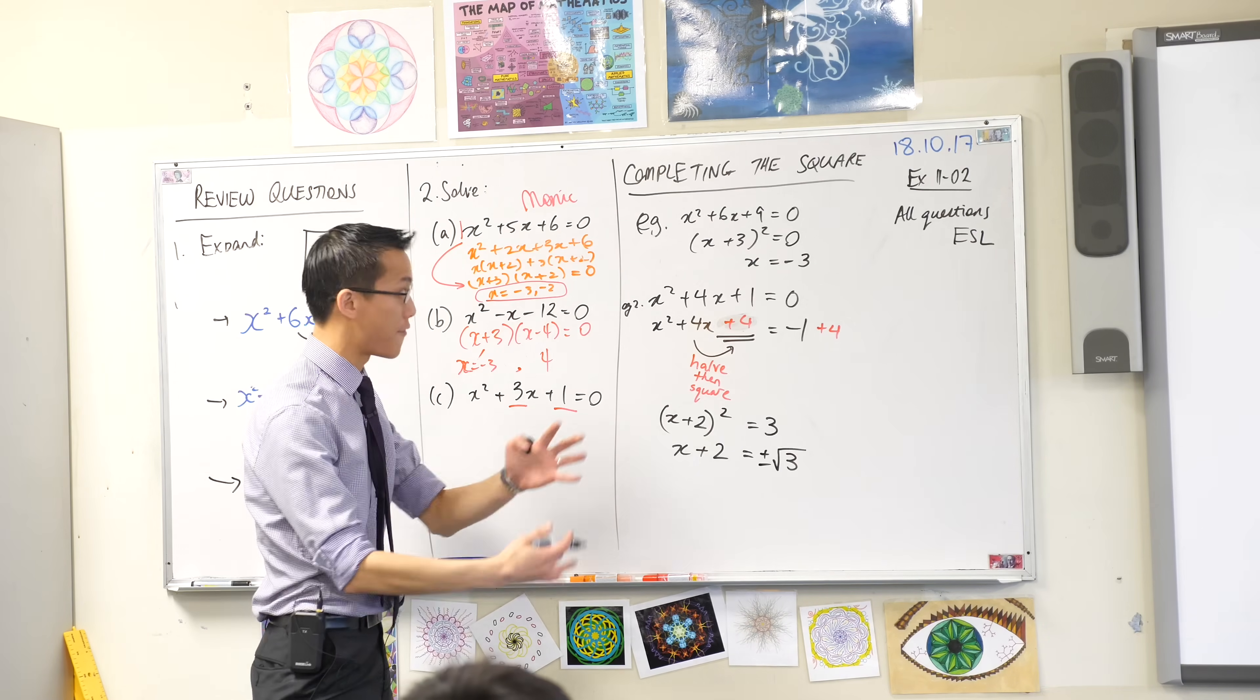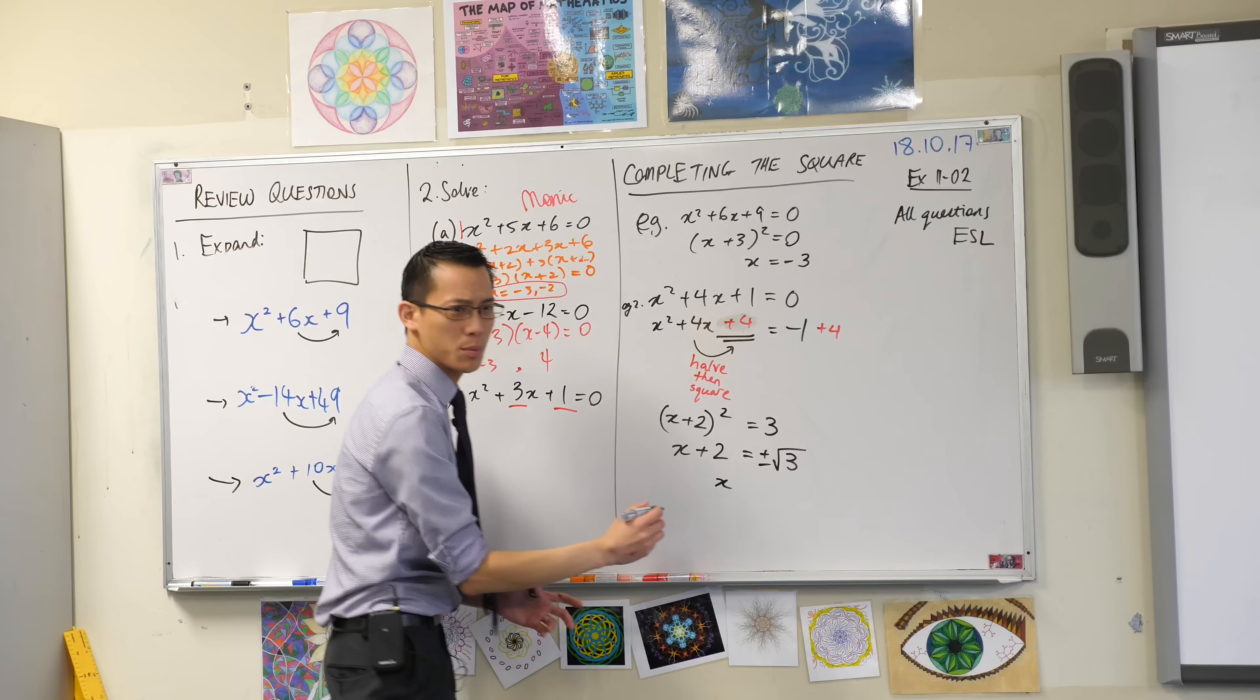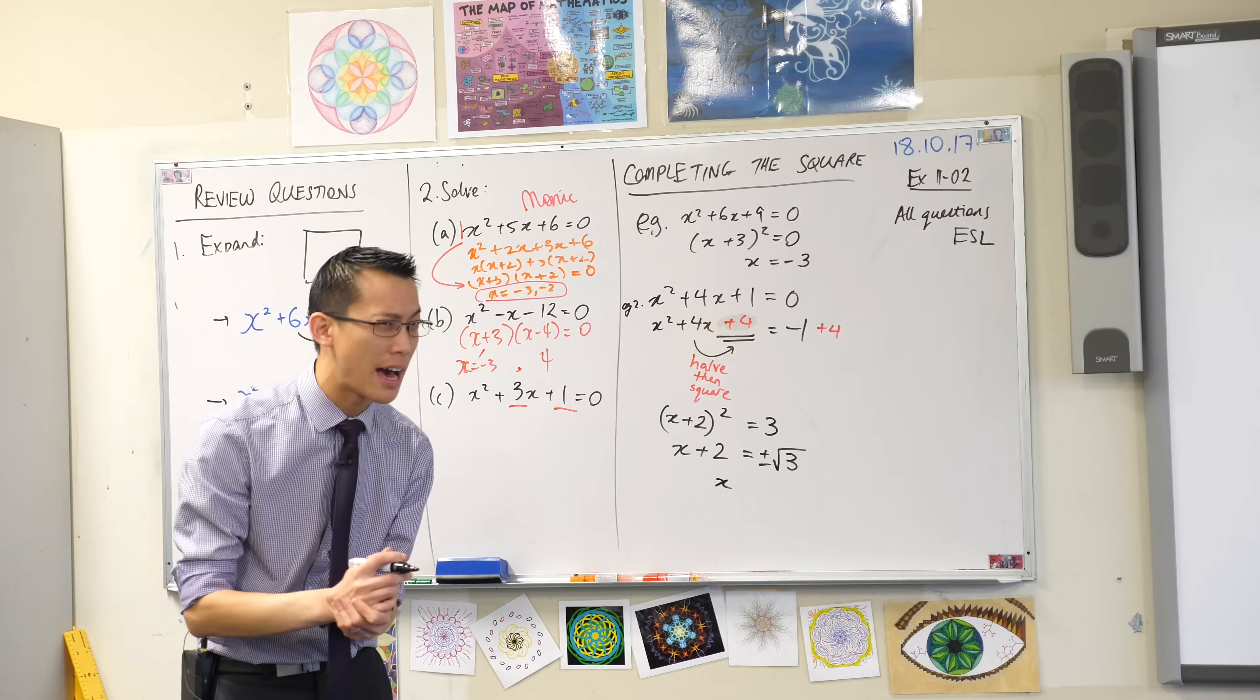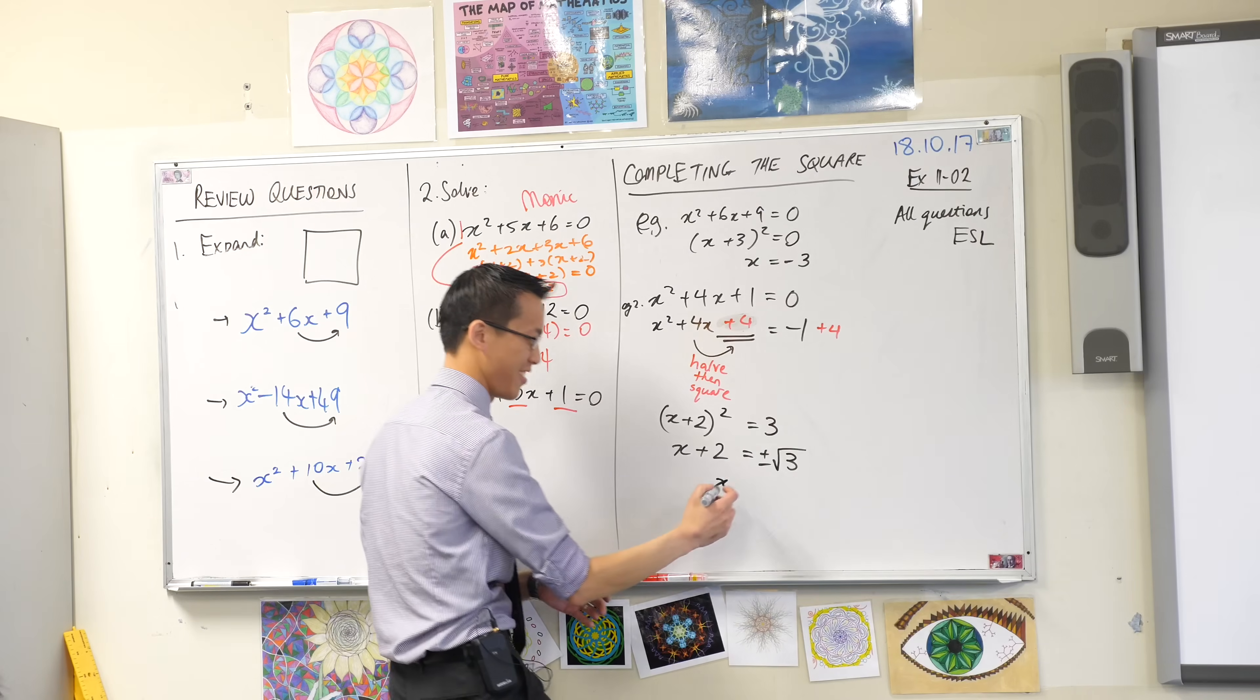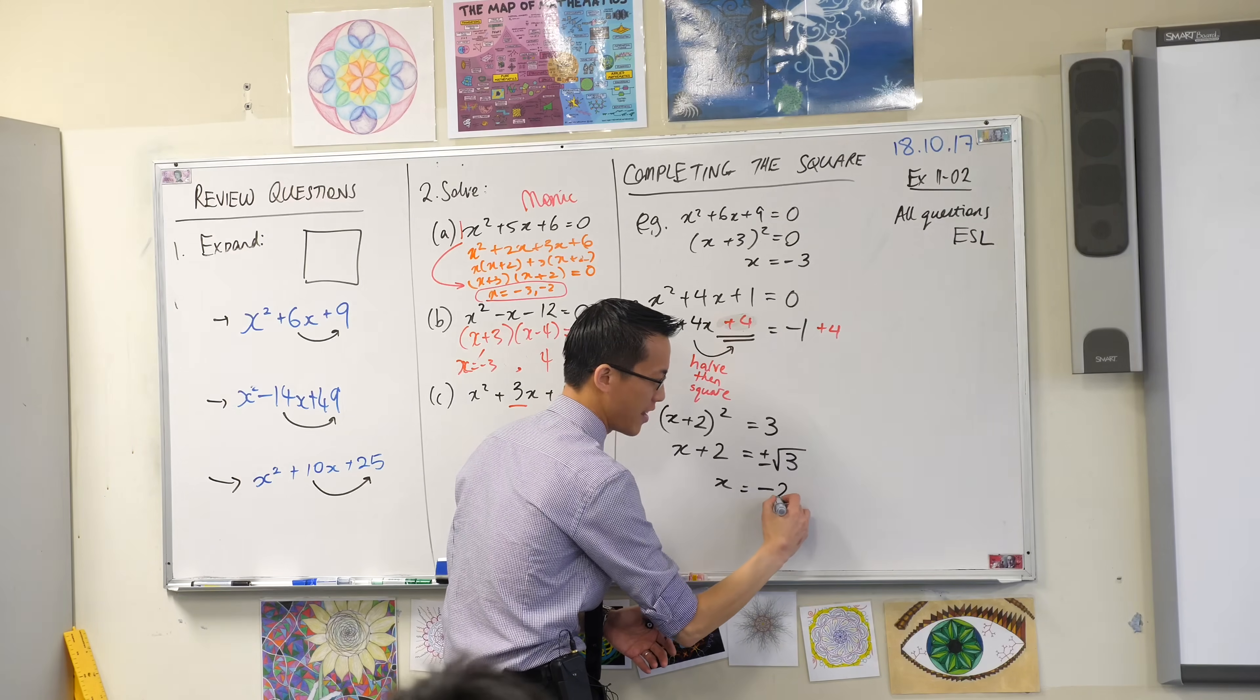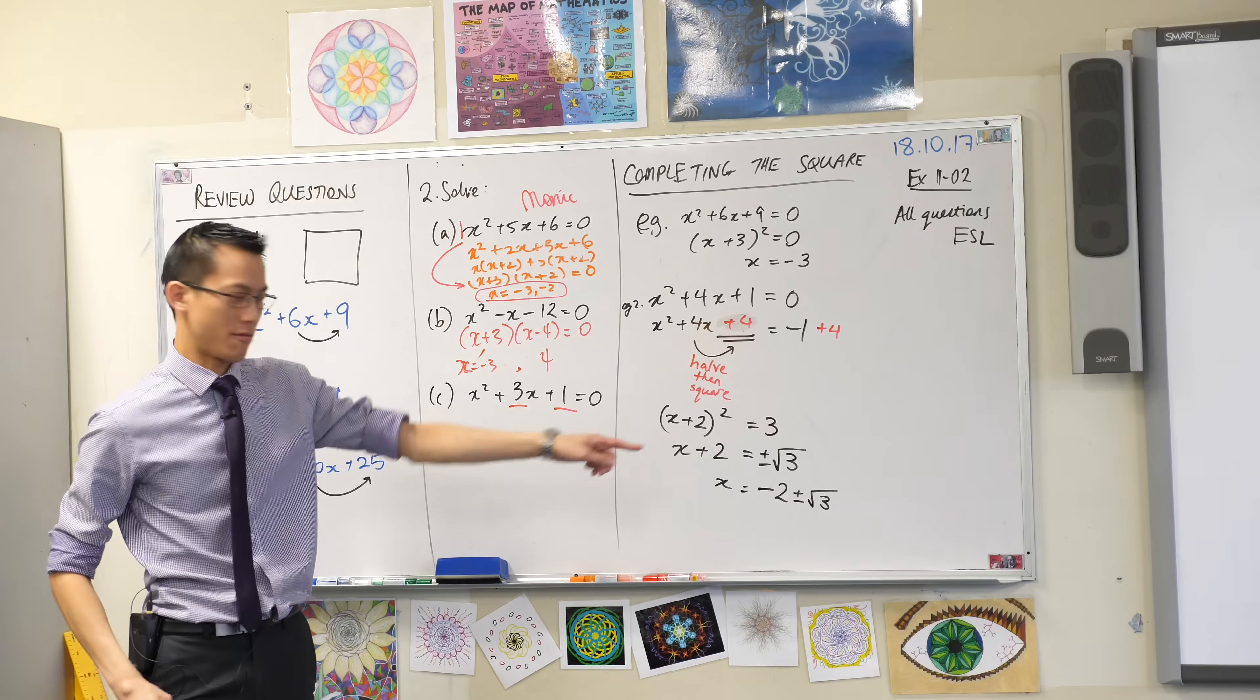One more line, and then we finally have our answer. I just want x, I don't want x plus 2, so what do I do to both sides to get x on its own? Subtract 2. I'm going to write it at the front. Now, what does this mean? What does that mean? Right?